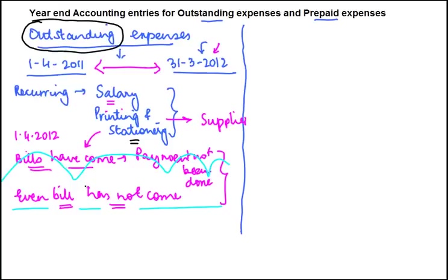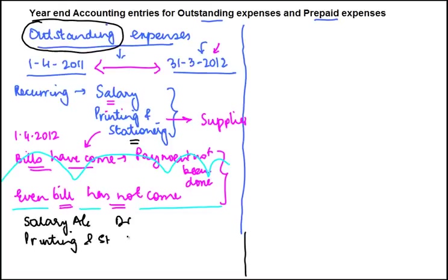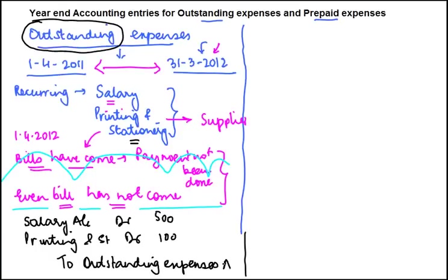Outstanding expenses are expenses which are remaining to be paid or provided but have not been booked in the accounts. In that case, we debit the relevant expense account — for example, salary account or printing and stationery account — by whatever amount, say 500 or 100, and we credit the outstanding expenses account.